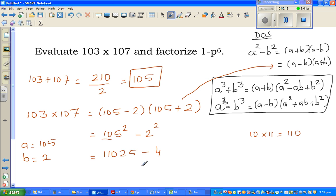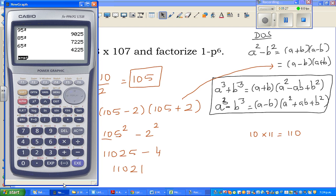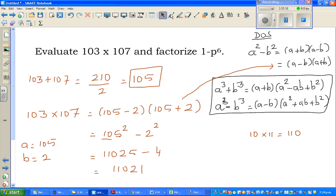So 11025 minus 4, 2 squared is 4, which is 11021. Let's take this on the calculator. 103 times 107 is 11021. This is how algebra can be so useful in many places.